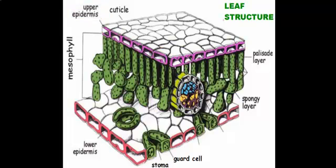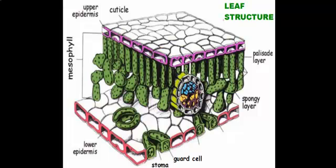Underneath the epidermis, you have this thick layer called the palisades layer. In these long structures in the palisades layer, there's a bunch of little speckles and dots — these are chloroplasts. So the palisades layer is chock-full of chloroplasts, which means the function of the palisades layer is to photosynthesize. Underneath the palisades layer, we have the spongy layer. The spongy layer is just filled with air spaces, just like a sponge. This is where oxygen comes out of the cells and carbon dioxide goes into the cells, similar to gas exchange in our lungs.